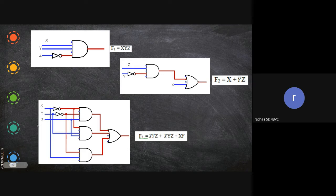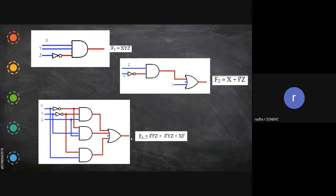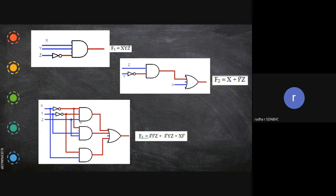And then x̄ here for the first equation, first term, x̄ is given as one input and then ȳ is given as input and z is directly given. So this is for first AND gate. Then for the second AND gate again it is...